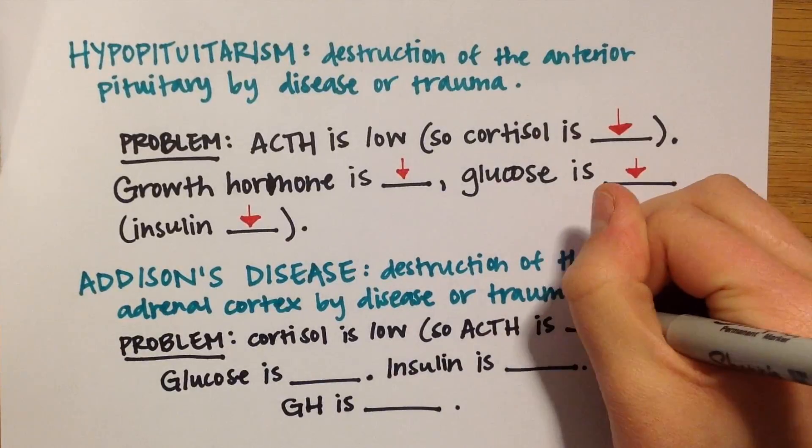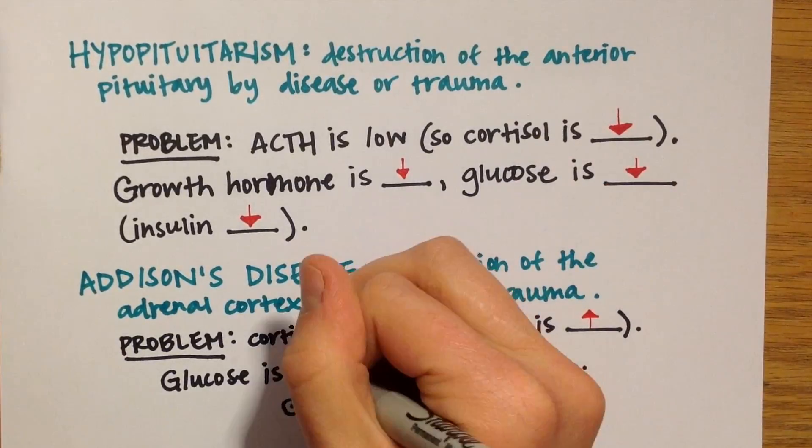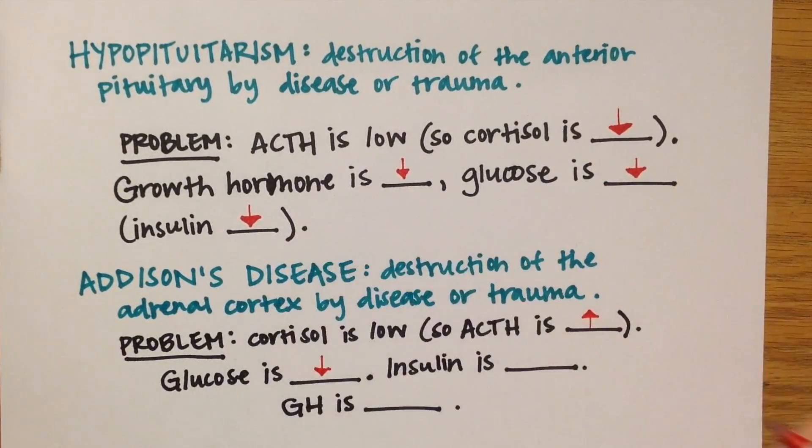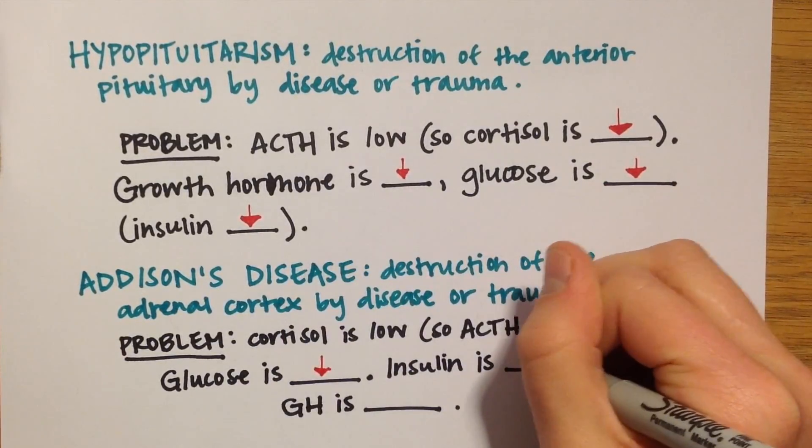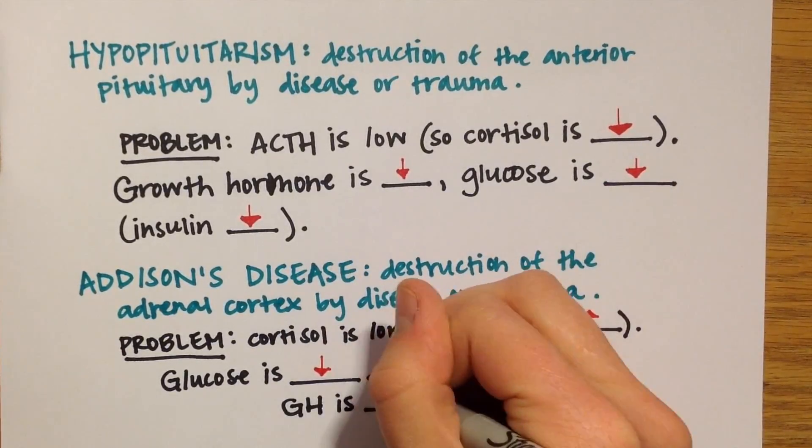In this case, ACTH would be high, glucose and insulin would be low, and growth hormone would be high.